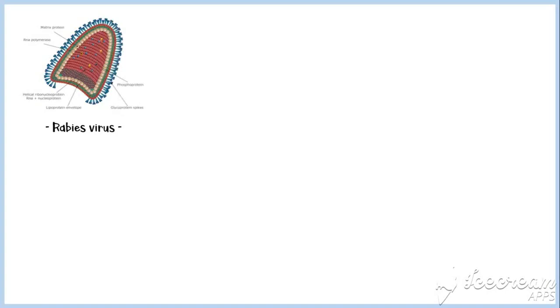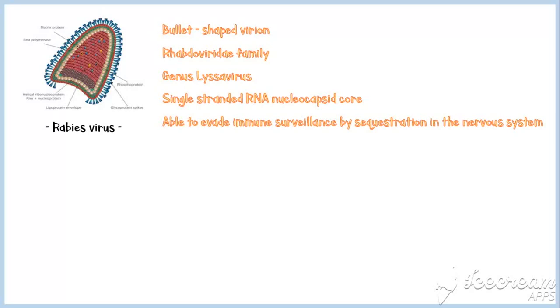Rabies is a bullet-shaped virion that belongs to the family Rhabdoviridae and genus Lyssavirus. It contains a single-stranded RNA nucleocapsid core. The virus is able to evade immune surveillance by sequestration in the nervous system.